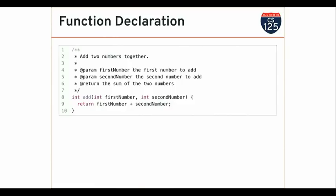Going back to the documentation: Javadoc requires that I provide information about every parameter the function takes. This is human-readable information — 'first number is the first number to add,' 'second number is the second number to add,' and 'returns the sum of the two numbers.' This is used to generate documentation for the function, which I'll show you in a few slides.